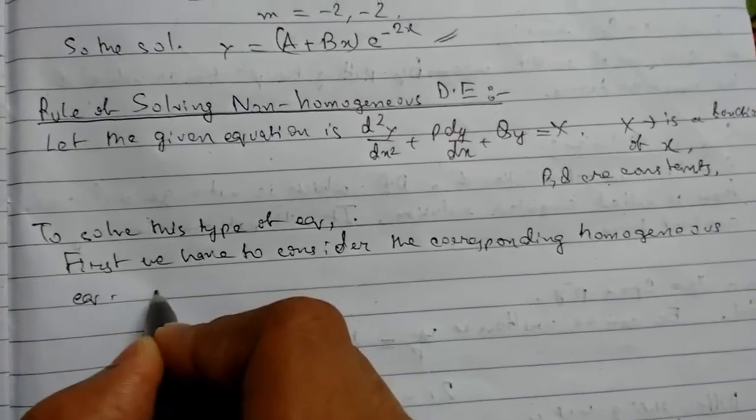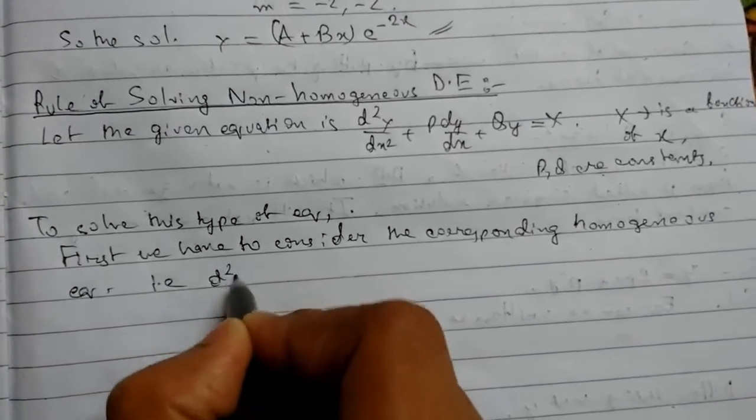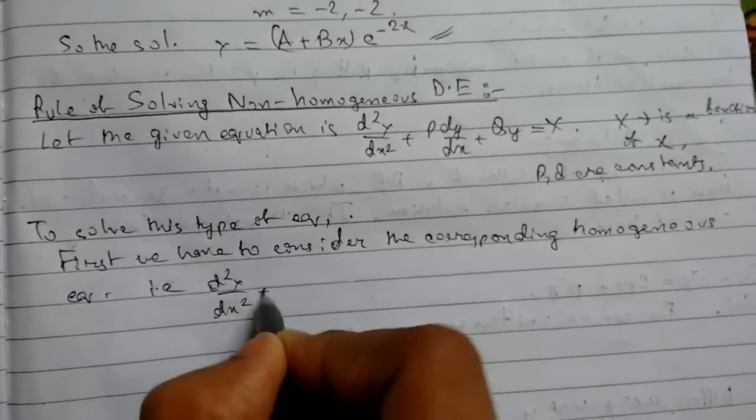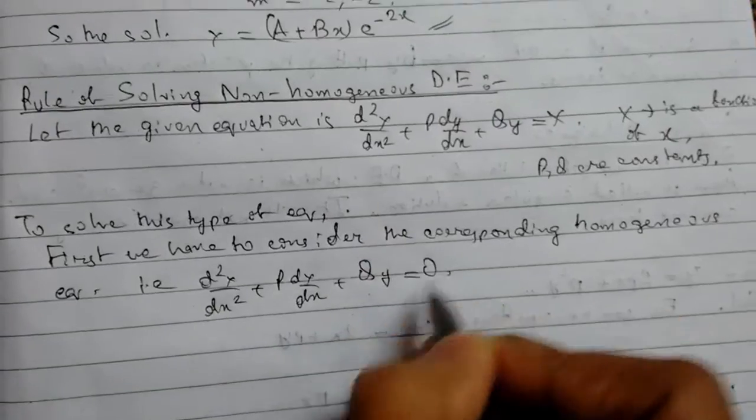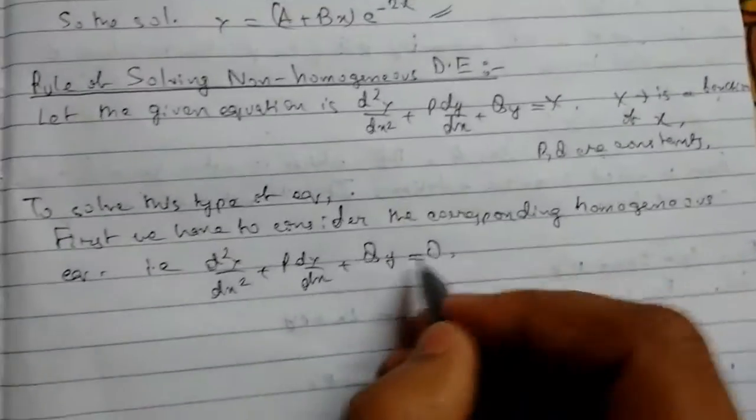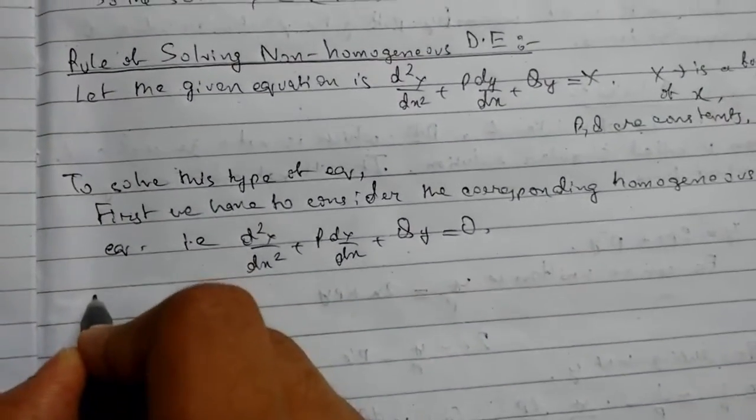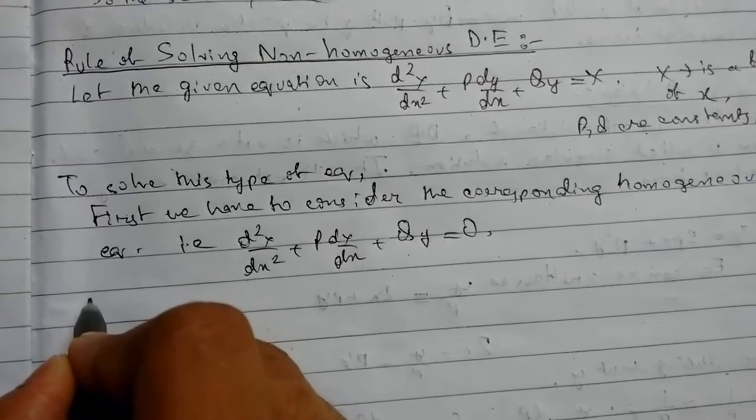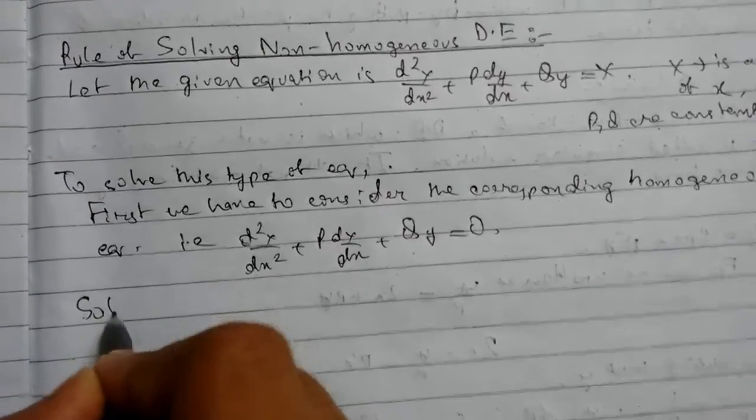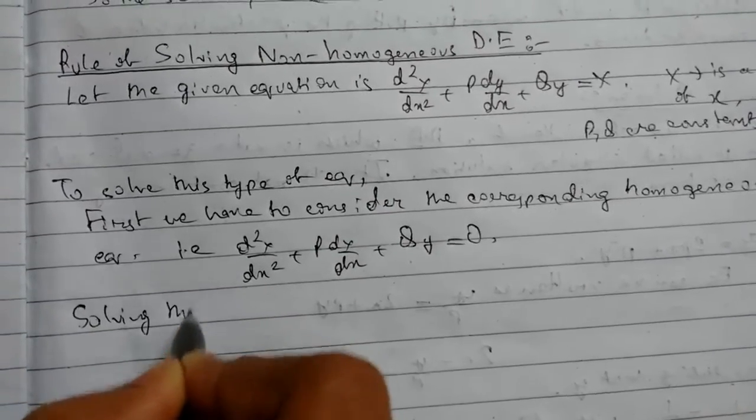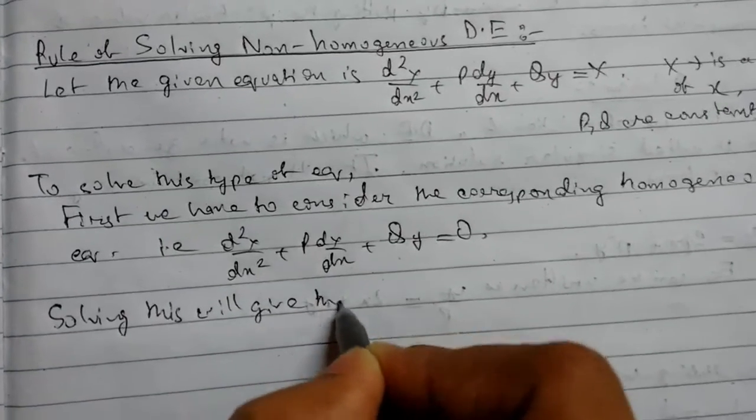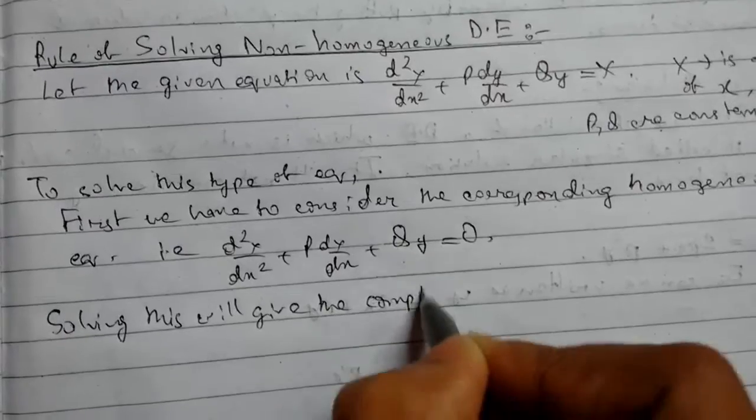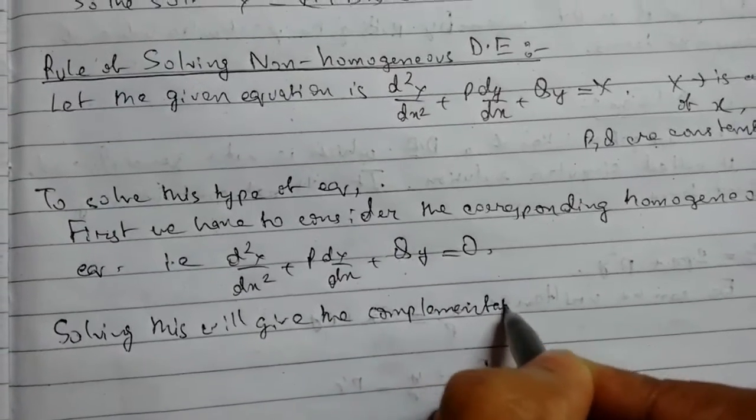We have to consider the corresponding homogeneous equation, that will be d²y/dx² plus p dy/dx plus qy equals 0, and on solving this we will get the complementary function.